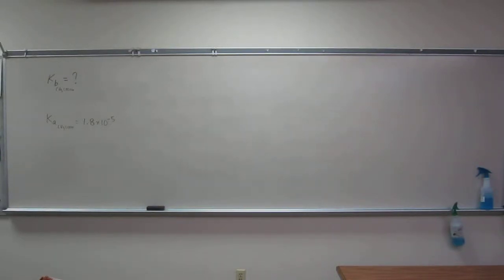So let's try this problem that says, what is the KB of sodium acetate if the Ka of acetic acid is 1.8 times 10 to the negative 5?